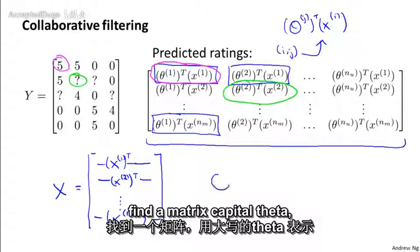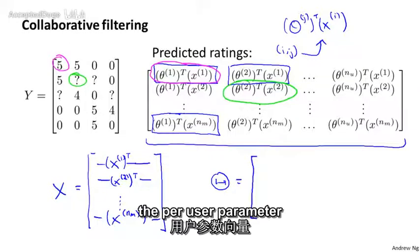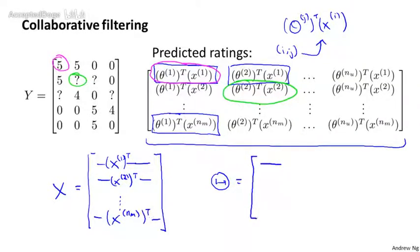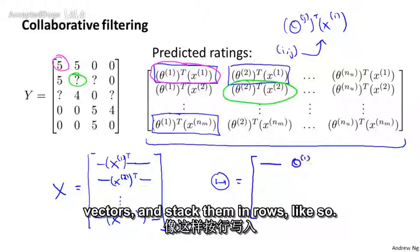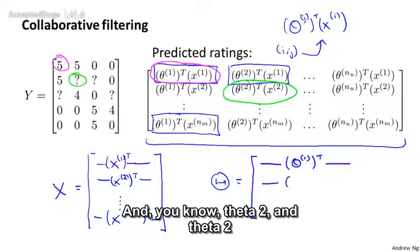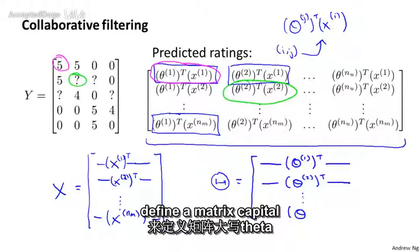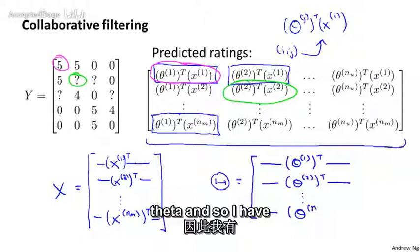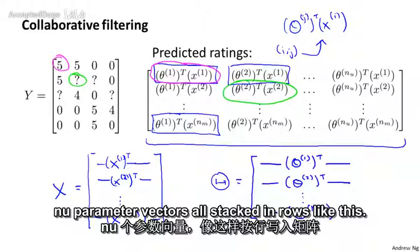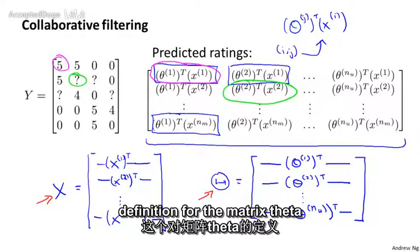And if we also define a matrix, capital theta, and what I'm going to do is take each of the per user parameter vectors and stack them in rows like so. So that's theta one, which is the parameter vector for the first user, and here's theta two. And so I'm going to stack them in rows like this to define a matrix capital theta. And so I have n u parameter vectors all stacked in rows like this.